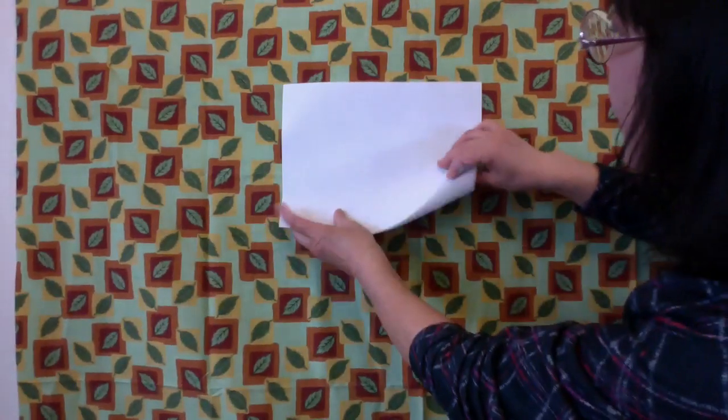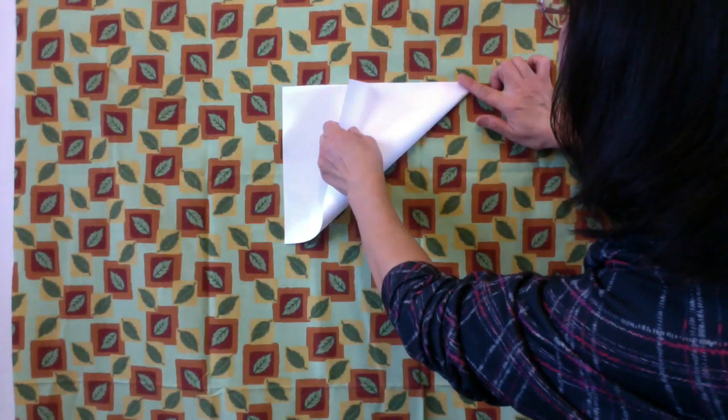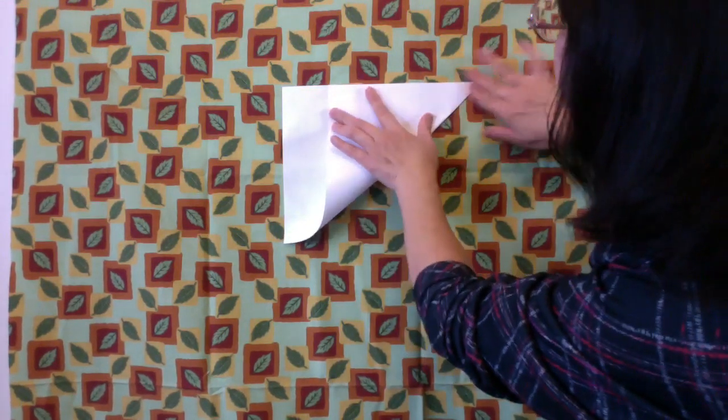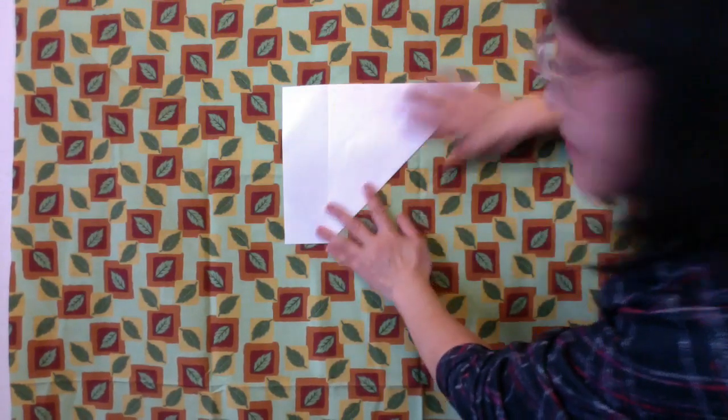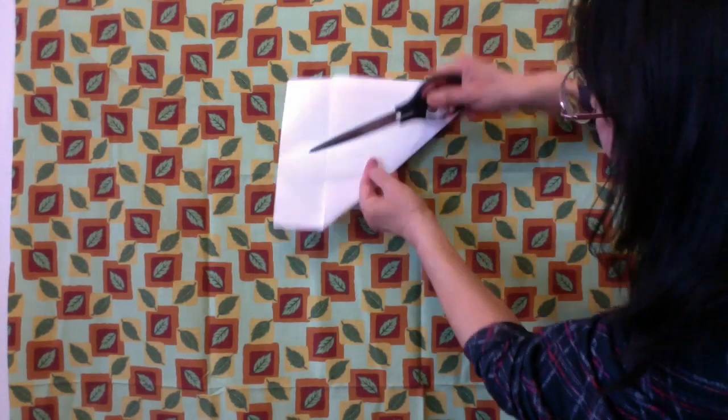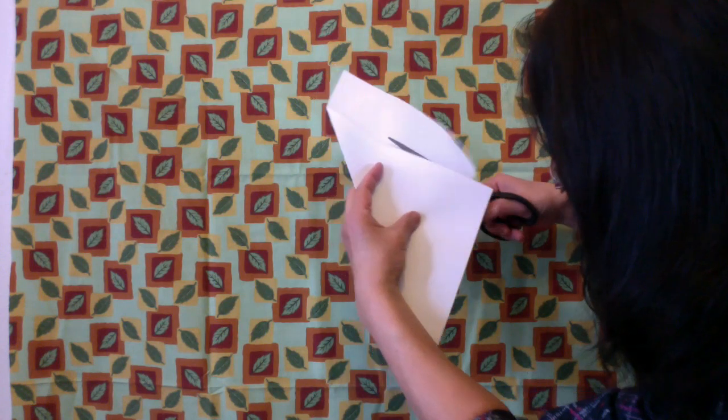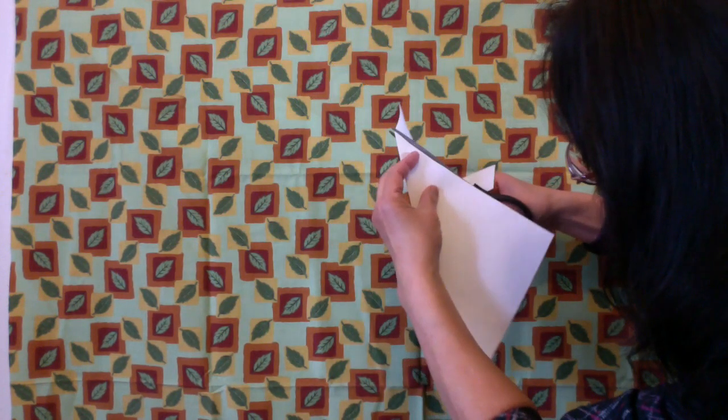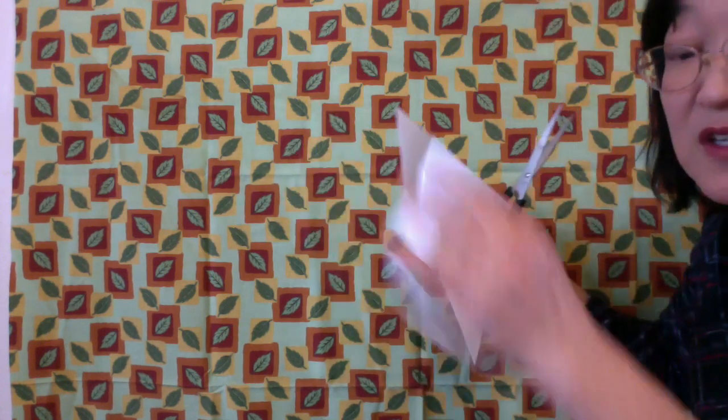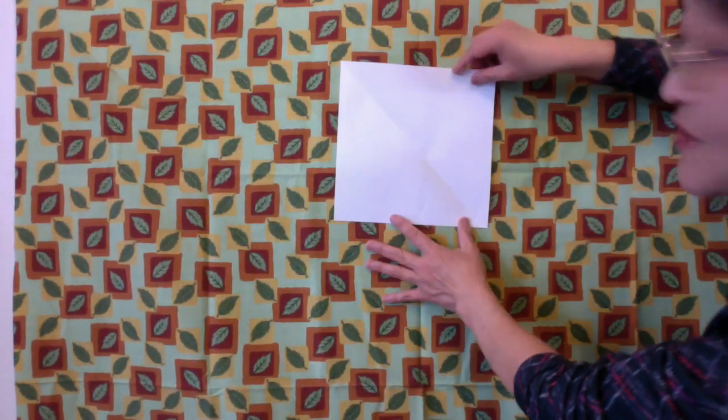But we have to start with a square. To make the square you fold the paper like this and we will have to get rid of this extra part. So cut along this edge of the triangle with scissors. You will not need that part. And open it up and you have a perfect square.